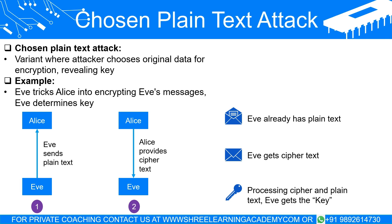The chosen plain text attack is a variant of the known plain text attack. In this scenario, the attacker has the ability to provide the original data to be encrypted. This can be especially harmful because the attacker can choose specific plain text that may reveal more about the key when it is encrypted. Suppose Eve can trick Alice into encrypting specific messages for her — the plain text of which Eve has chosen herself. Since Eve knows the plain text and now has the cipher text, she can start solving for the key, enabling her to decipher all of Alice's future communications using that key.